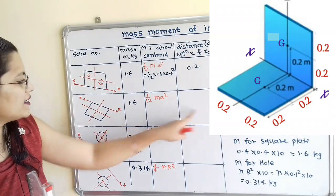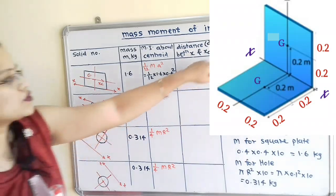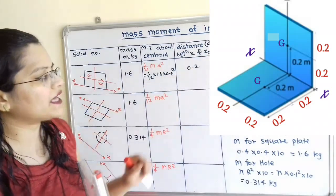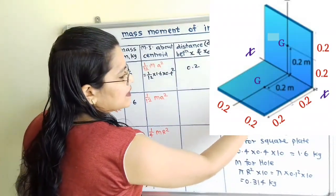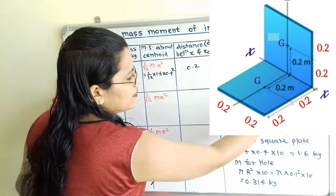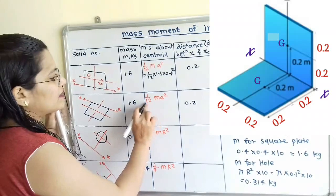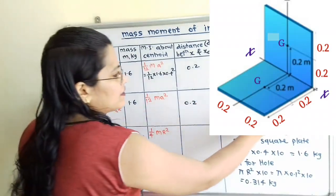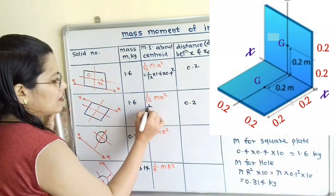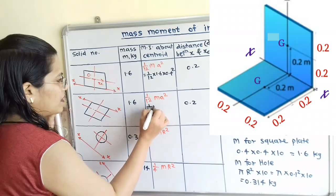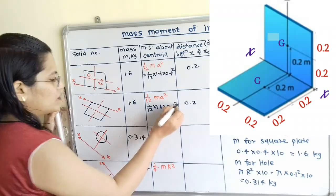The same data is repeated for shape number 2, since these two square plates are identical. The distance between XC and X is also 0.2, which is the center of that side. The moment of inertia about the centroid is (1/12) × 1.6 × (0.4)².